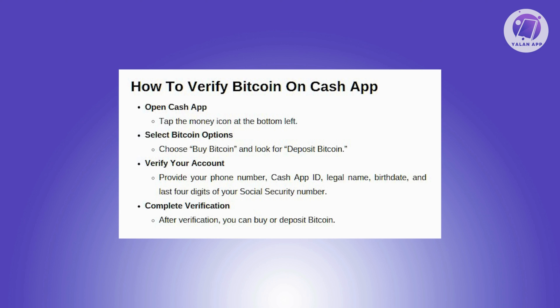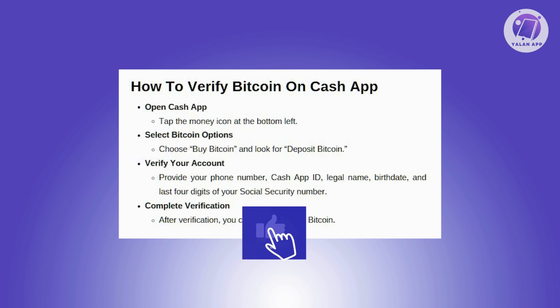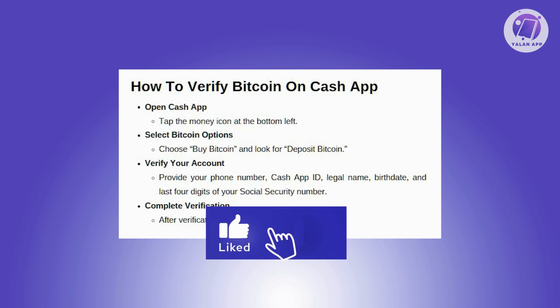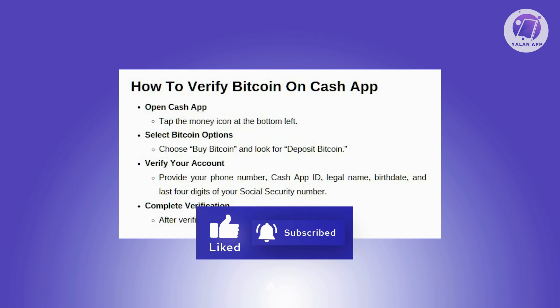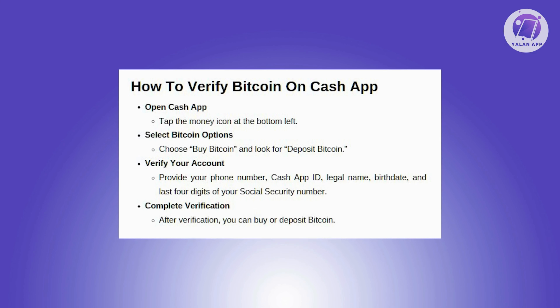This process requires you to provide necessary details, for example, your phone number, Cash App ID, legal name, birthday, and the last four digits of your social security number.